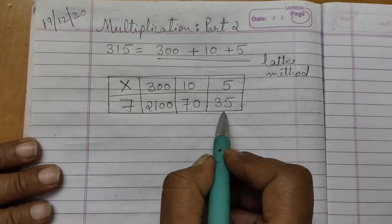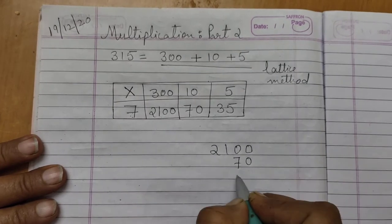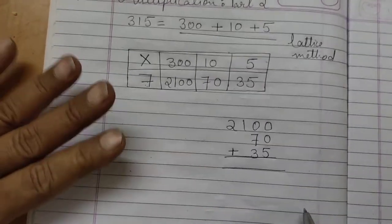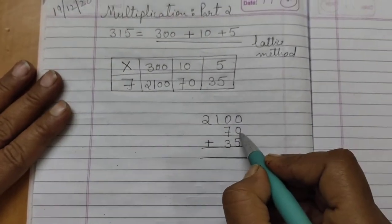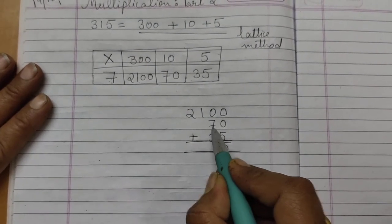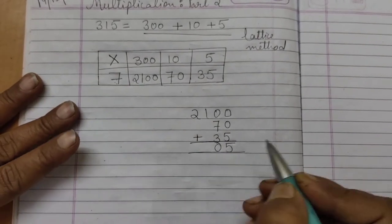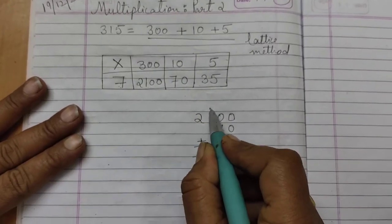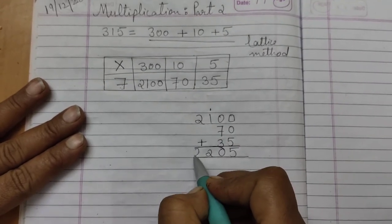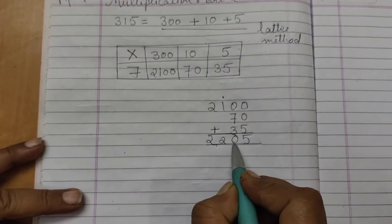Now what will you do? This 2100, 70 and 35 — you will add. While adding: 0 plus 0 is 0. 0 plus 5 is 5. Now 7 plus 3 is 10. 0 here and carry 1. 1 plus 1 is 2. Here no number is there, so 2 will come down. The answer is 2205.